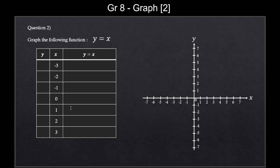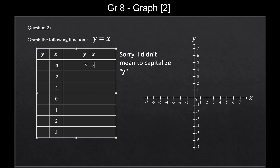Now let's look at the first one. x is minus 3. So according to the function above, y is equal to minus 3. Wait, what? Is that it? Yes, that is it. We already found the y value. Because look, it does say y equals x. So whatever the x number is, y should be the same number. That's what the equal sign means, right?